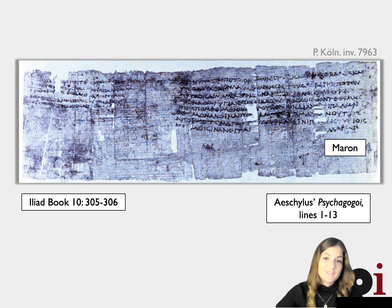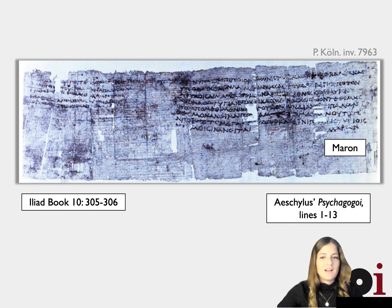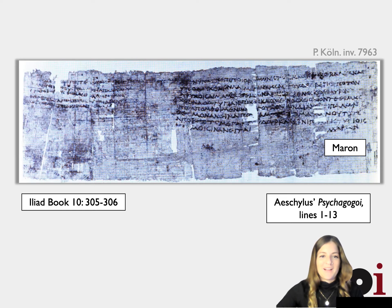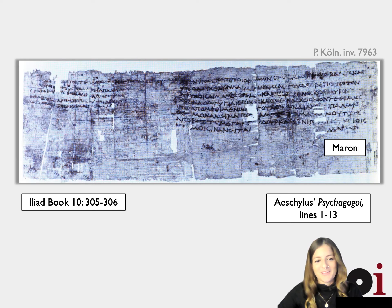On the left, our first student has copied out a section of the Iliad, book 10, lines 305–306, along with three unidentified lines in meter. On the right, our student has written out a chorus from an Aeschylus play, and at the bottom, his name: Maron. This hand is obviously not as well practiced as the one we know from our fragment, but he's working on it.